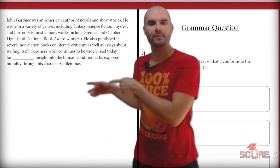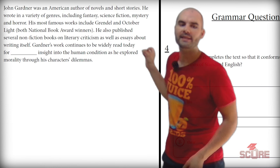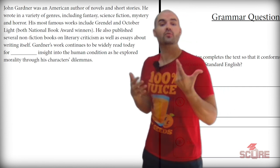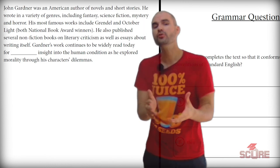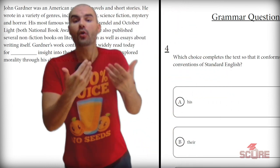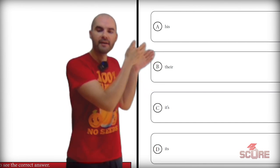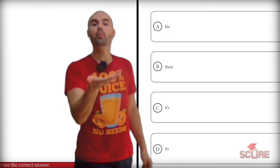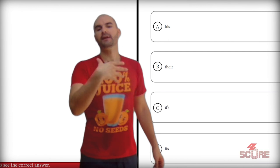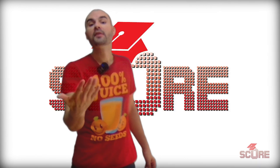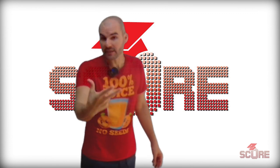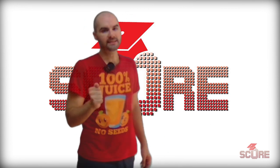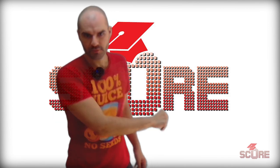For the fourth question, the blank says 'Gardner's work continues to be widely read today for blank insight.' The subject is Gardner's work, not Gardner himself. I want a word that represents his work — work being the key word. The options are: his, their, its, and it's. Since 'work' would be replaced by 'it,' and we're using it in the possessive, we say 'its' without the apostrophe. Remember: the apostrophe with 'it' always means 'it is.' If you plug in 'for it is insight,' it would be wrong. 'For its insight' without the apostrophe is correct.